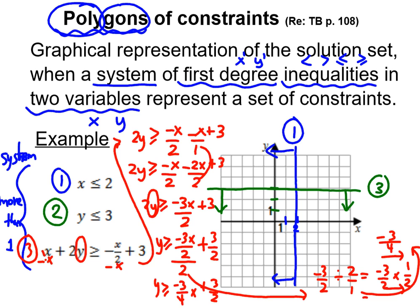To graph this, you start with your initial value — your b. The initial value is 3 over 2, which is 1 and a half. Your negative 3 over 4 is your rate of change, so you start going down 3 and then forward 4. Starting from the initial value point: down 3 — 1, 2, 3 — then forward 4 — 1, 2, 3, 4 — and graph that point.